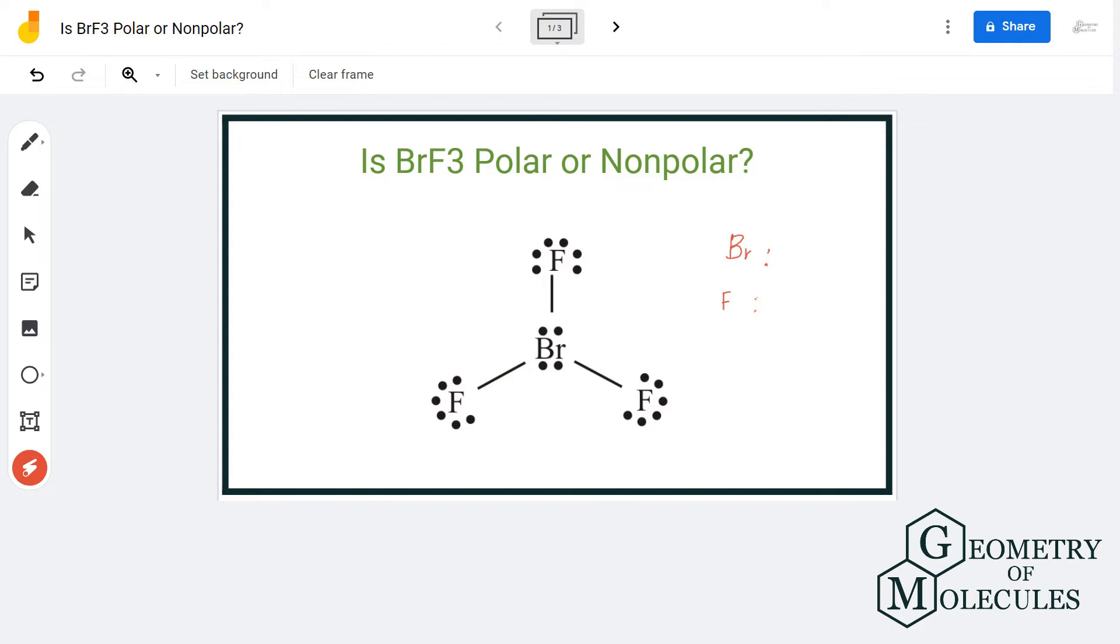Hi guys, in this video we are going to determine the polarity of BrF3 molecule. BrF3 is a chemical formula for bromine trifluoride, made up of one bromine atom and three fluorine atoms. To understand the polarity, we shall first look at the Lewis structure of this molecule.